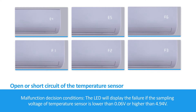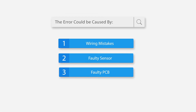Malfunction decision conditions: The LED will display the failure if the sampling voltage of the temperature sensor is lower than 0.06 volts or higher than 4.94 volts. The error could be caused by: 1. Wiring mistake, 2. Faulty sensor, 3. Faulty PCB.